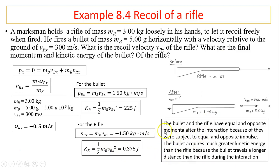The bullet and rifle have equal and opposite momenta after interaction because they were subject to equal and opposite impulse. However, the bullet requires much greater kinetic energy than the rifle because the bullet travels a longer distance than the rifle during interaction. It's the same force on the bullet and on the rifle, but inside the rifle, the bullet travels a much longer distance, so more work is done on the bullet.